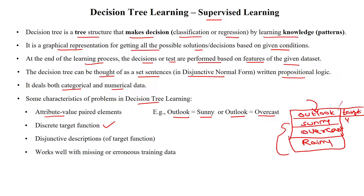The output function will be discrete, like a target value. The target label is mostly a discrete value like yes or no, or represented as zero and one. The decision tree also works well with missing values or error values in the training data — it can handle missing values in samples easily.